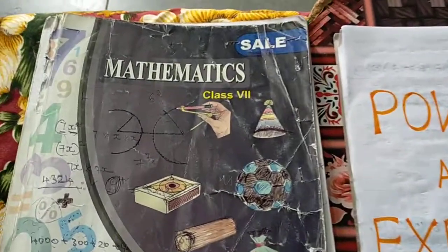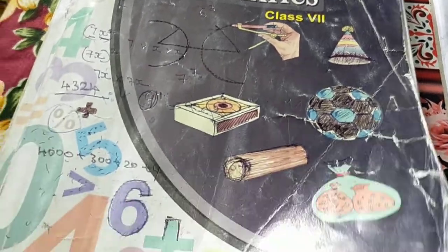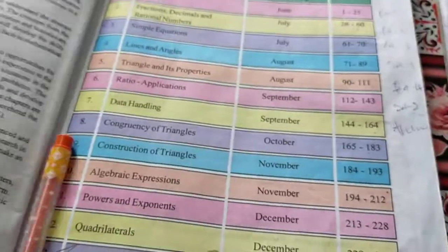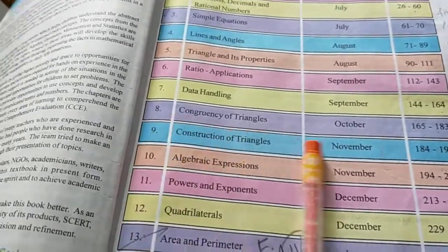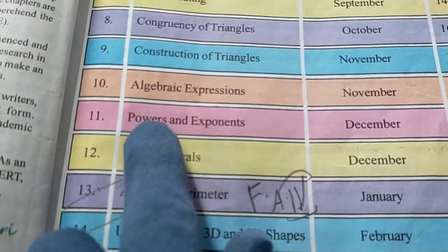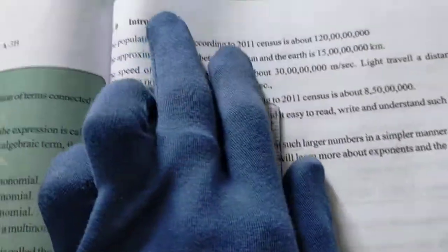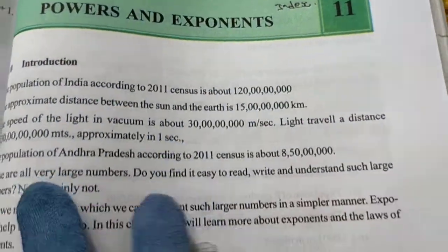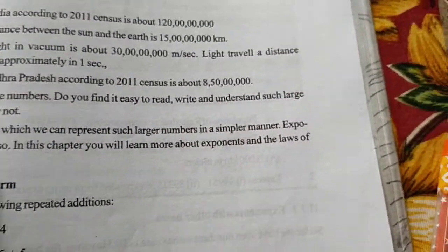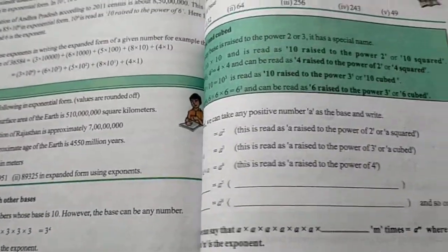This is the mathematics textbook of class 7. In the previous videos we started with chapter 11, Powers and Exponents. Powers, exponents, index — it all means the same. We have done an intro and started with exercise 1.